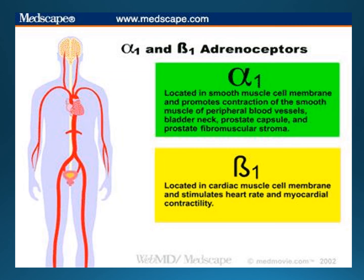There are baroreceptors in the carotid sinus, the aorta, and the left ventricle that sense blood flow, and through the sympathetic nervous system make changes in heart rate and peripheral vascular resistance. There are two distinct neural systems known as the alpha adrenergic and beta adrenergic systems — alpha-1 affecting the peripheral vascular resistance and beta-1 affecting the heart rate and contractility.